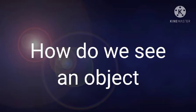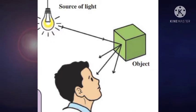We know the property of light — when it falls on an object, it reflects. Consider any source of light and any object: when the light falls on the object, some of the light reflects from the object and then enters into our eyes, and only then the object becomes visible. If light does not enter into our eyes, then that object is not visible.